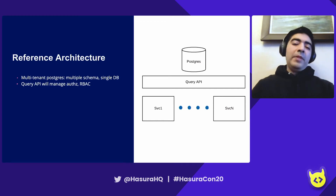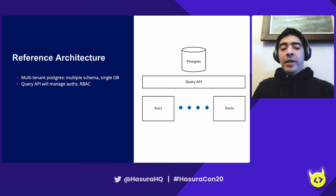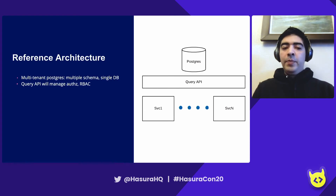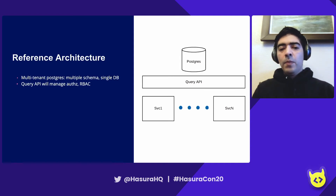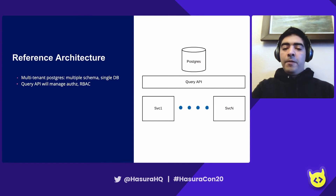In its simplest iteration, the reference architecture for us looks something like this. We use the tried and true Postgres. We'd have some type of query API that would manage our authorizations, role-based access control, and then services would interact with this query API. In a picture this looks quite simple, but in practice, building out a fully featured role-based access control system from scratch would be a lot of work and mostly boilerplate — not working towards the core directive, which is to enable these digital services.